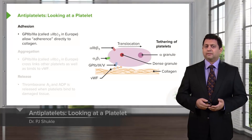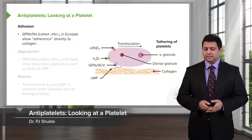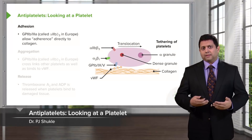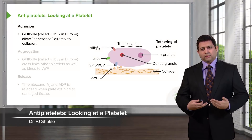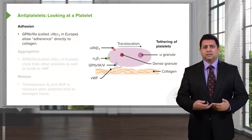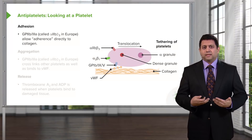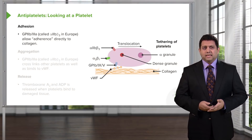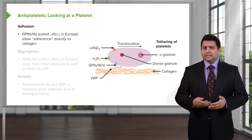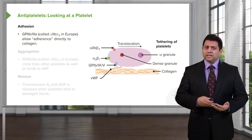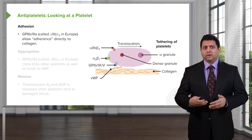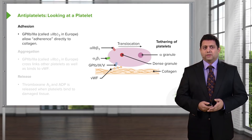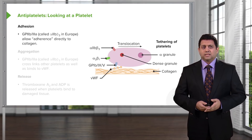Let's start off with looking at a platelet. A platelet is a very important part of the blood clot — it's like the brick in a wall. And platelets, if they don't adhere to each other, aren't going to form very good clots for us.